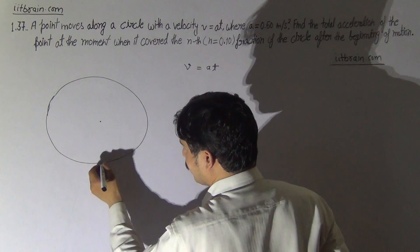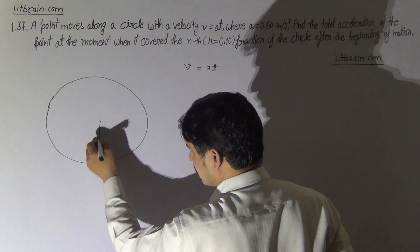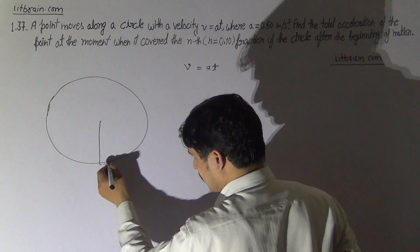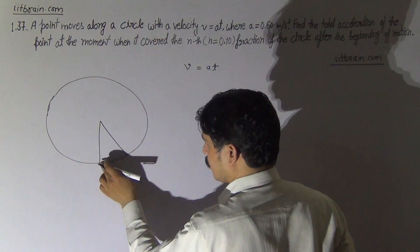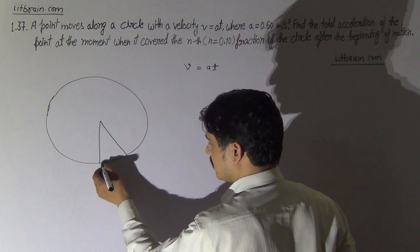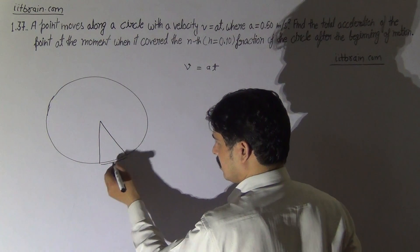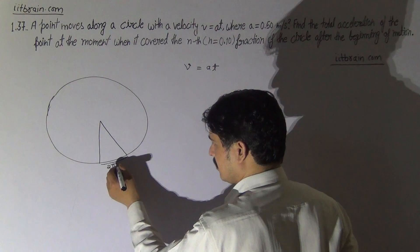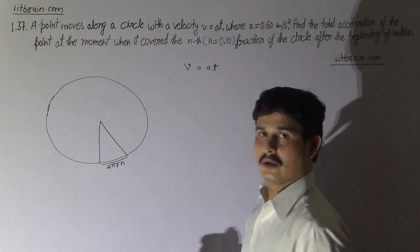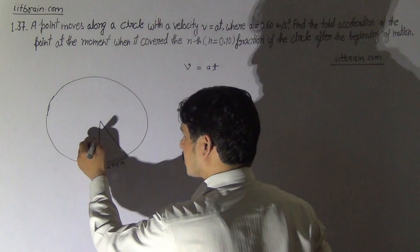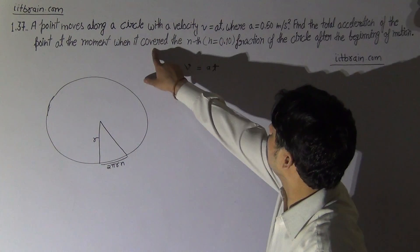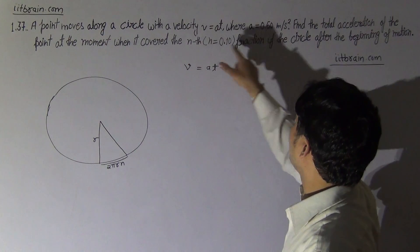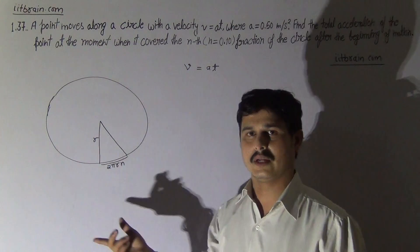When it covered 0.1 fraction of the circle, it will cover nth fraction, which is 2πr into n. Complete circumference, let r be the radius of that circle, then complete circumference will be 2πr. We have to cover only nth part of the circle, so this distance will be 2πrn.